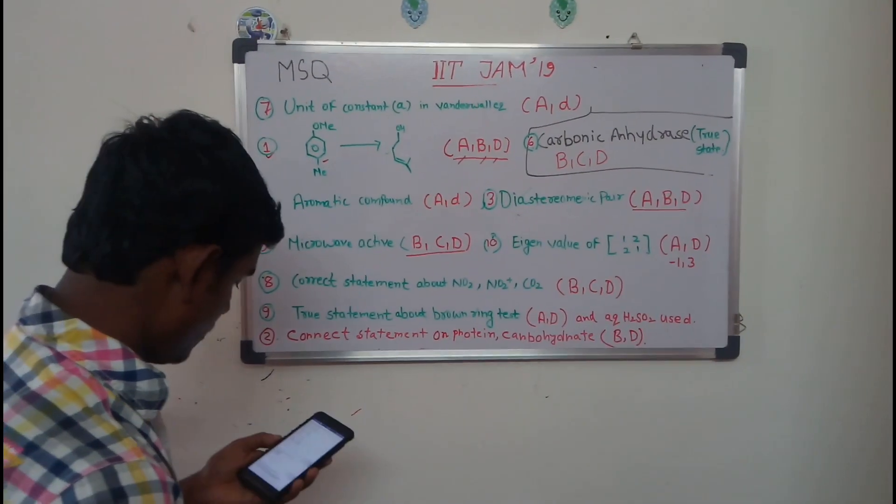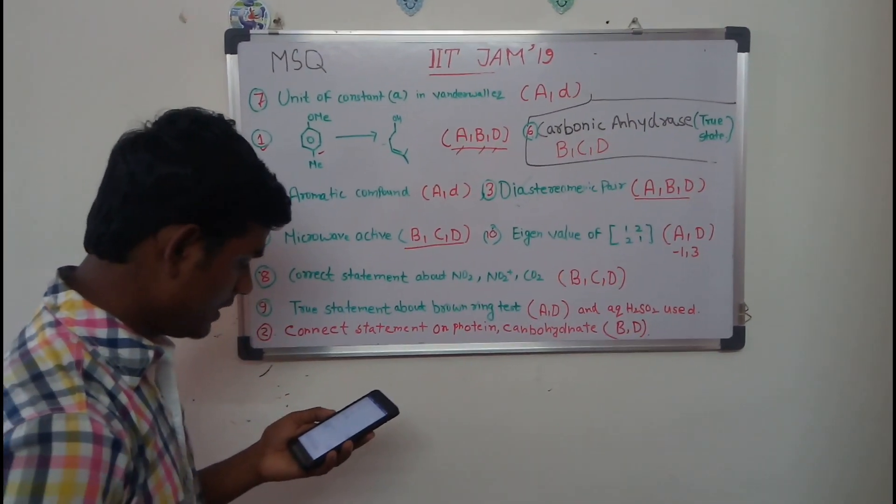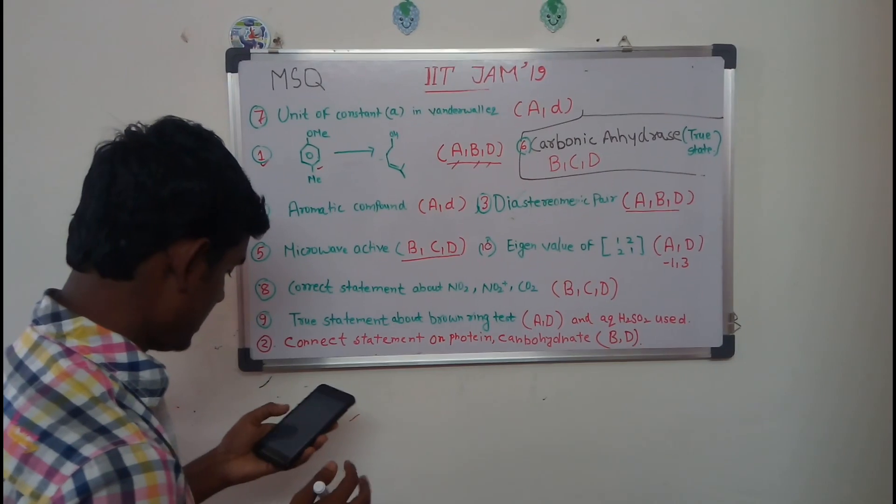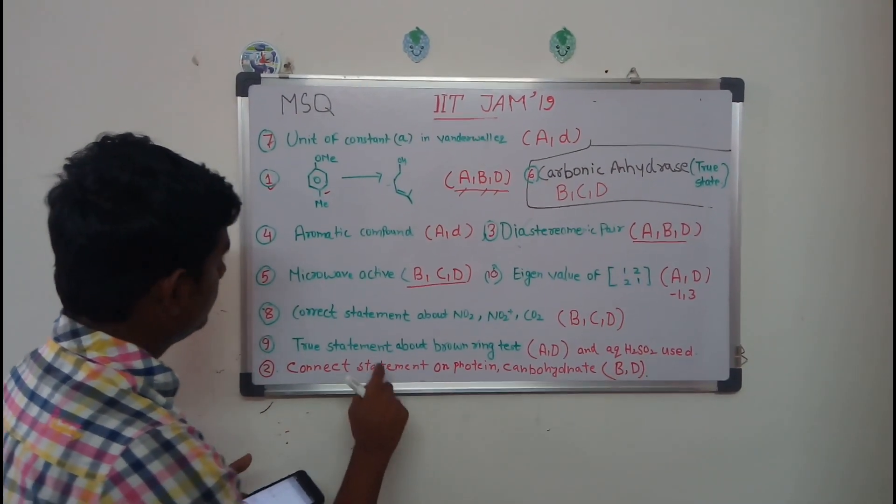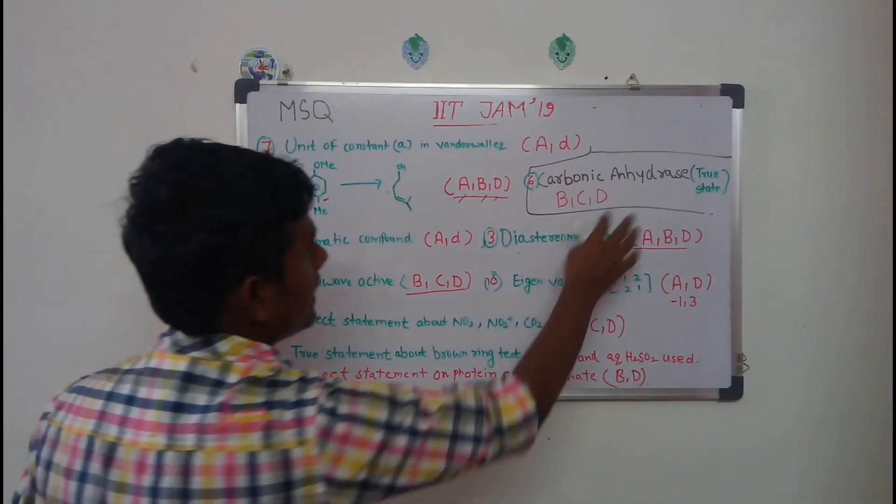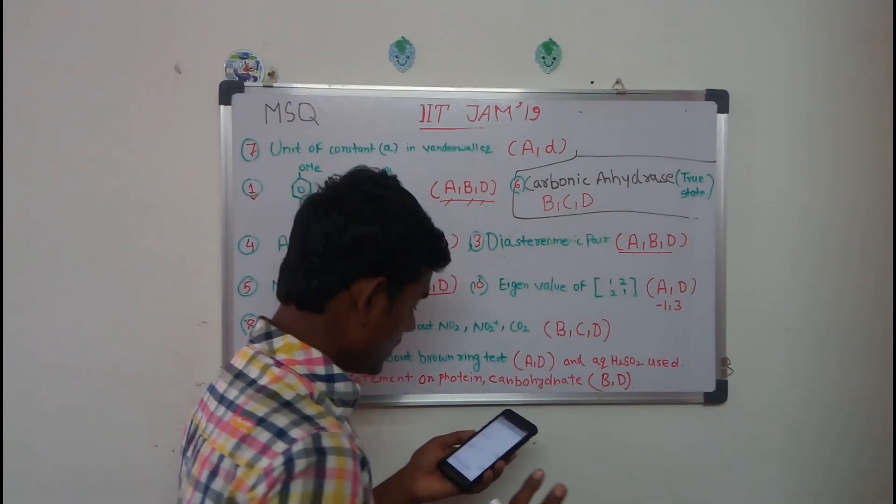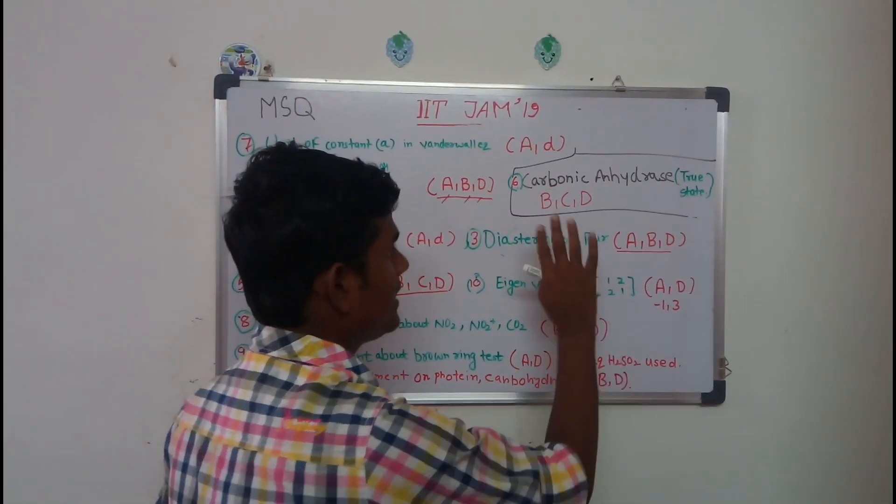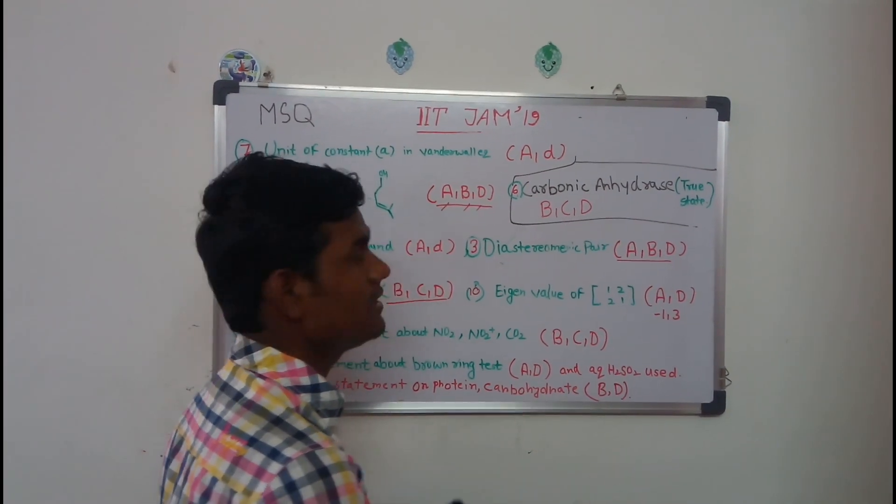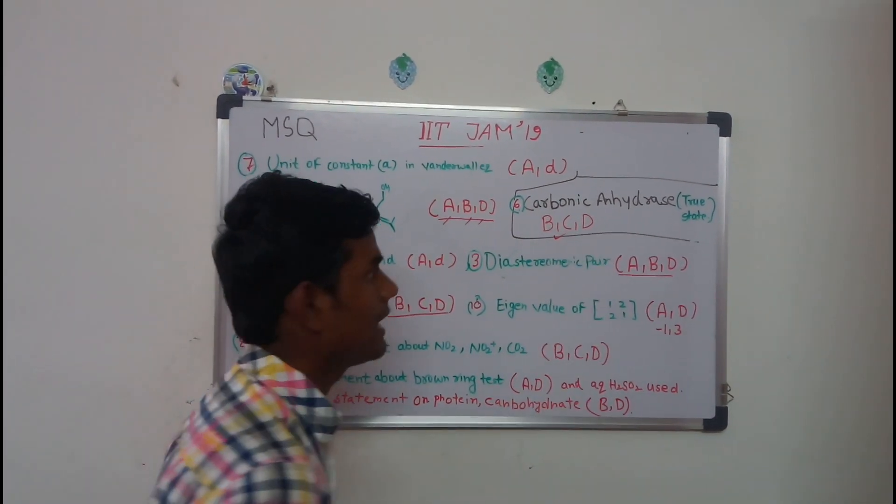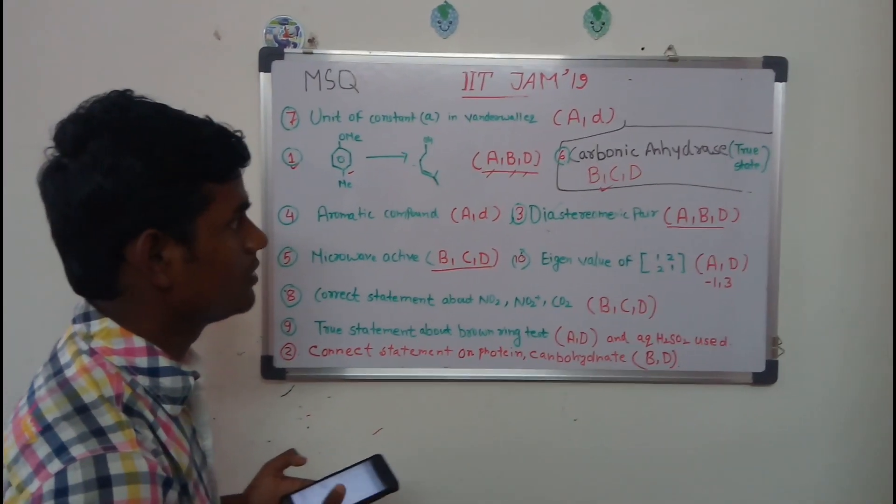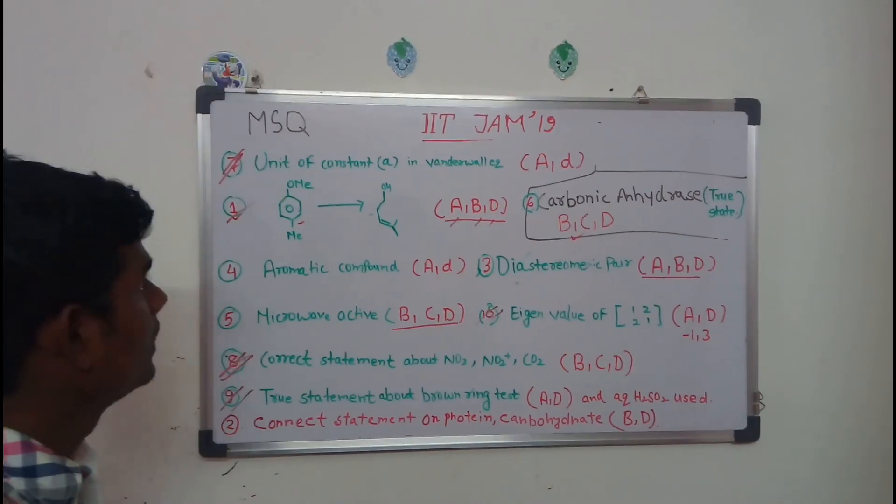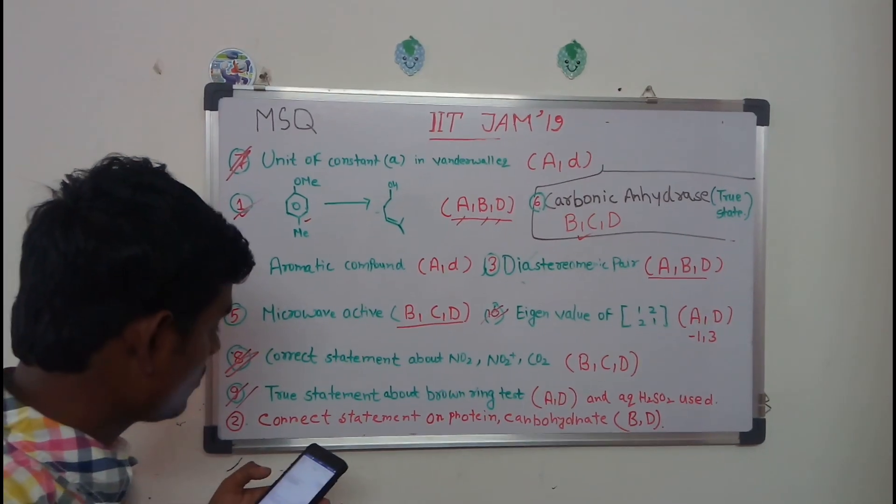Let's take another question which asked about carbonic anhydrase enzyme. They have given four options: involved in peptide bond cleavage is A. So you know that it is not peptide bond cleavage, so A is not the option. And options B, C, D if you check, are the correct answer. I am not going to discuss fully here. Stay tuned with us, we are going to discuss it fully later.